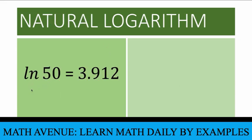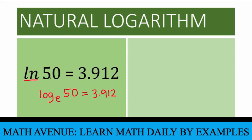You might also encounter the symbol 'ln.' For example, ln of 50 equals some number. 'ln' is the same as the logarithm to the base e — so ln is a shortcut way of writing log to the base e. For instance, ln of 50 equals 3.912 means the logarithm to the base e of 50 equals 3.912. To write this in exponential form, we write e raised to the exponent 3.912 equals 50.